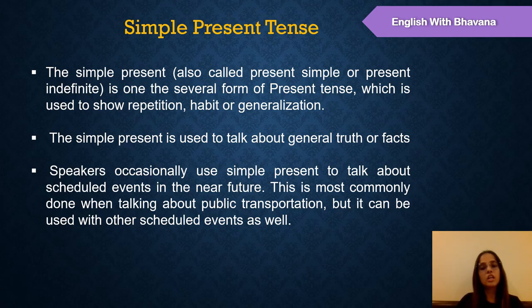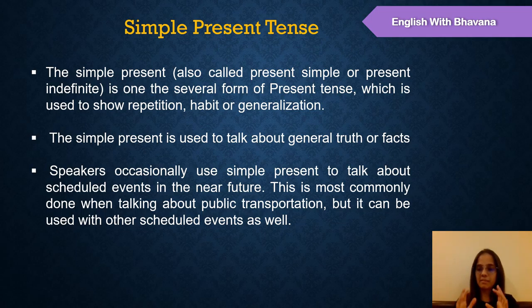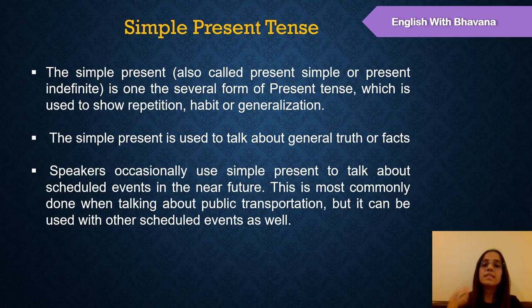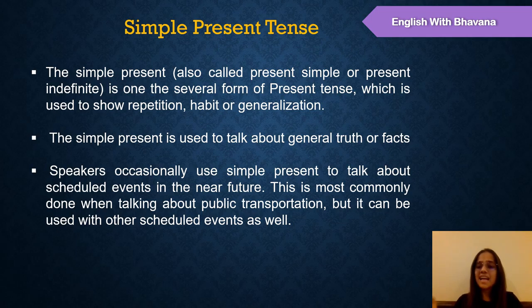Simple present tense is also called present simple or present indefinite. It is one of the several forms of present tense which is used to show repetition, habit, or generalization. The simple present tense is also used to talk about general facts. For example, every day you have a habit to get up early in the morning — 'Every day I get up at 7am.' That is my habit, it is repetitively done by me. So it comes under simple present tense — repetition, habit, or generalization.